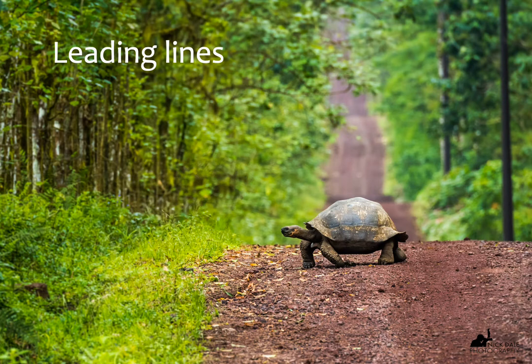Leading lines are another way to lead the viewer's eyes towards the subject. The subject is the most important part of the frame — particularly in wildlife photography, because we don't really care about the background. It may add atmosphere or show the animal in its environment, but the reason we look at wildlife photographs is because we love wildlife. Leading lines are any strong lines in the image that lead towards the subject — in this case, it's the dirt track going towards the horizon, leading the eye from foreground to background, and then there's the tortoise.